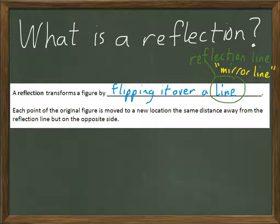The way to carry out a reflection is that each point of the original figure is moved to a new location that is the same distance away from the reflection line but on the opposite side. So if you're two feet from the mirror in your bathroom then your reflection appears to be two feet behind the mirror. Same concept here. So let's actually do it to a geometric figure.